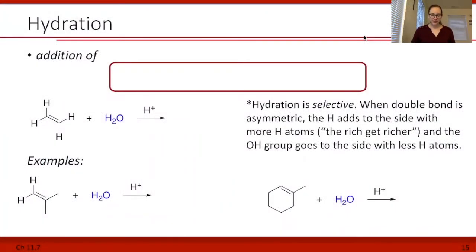Our next addition reaction is the hydration reaction. This is the addition of water, H2O, across the alkene. In this reaction, we have an alkene, then we add water as our reagent or reactant, and that yields our alcohol.